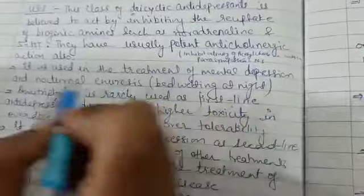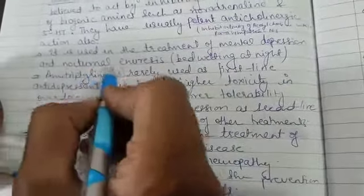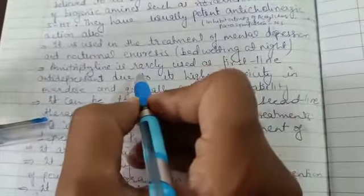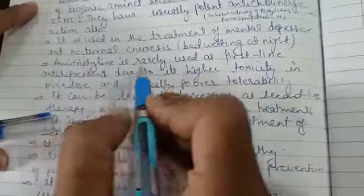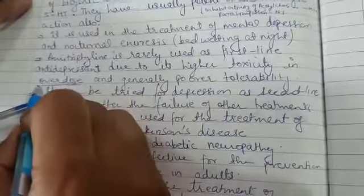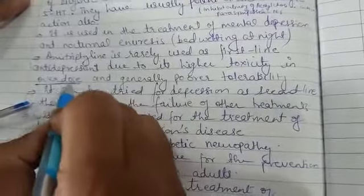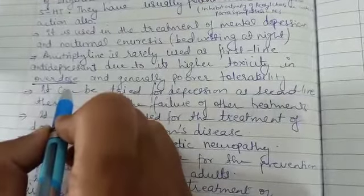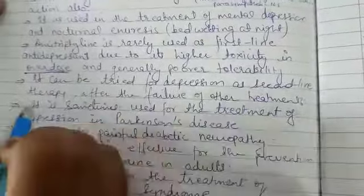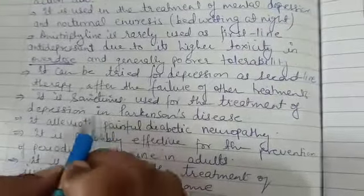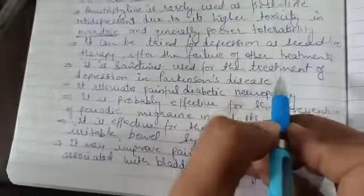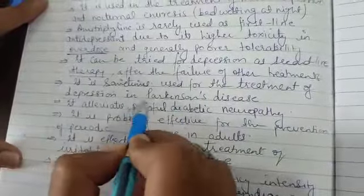It is also used in the treatment of mental depression and nocturnal enuresis. Some children who have bedwetting at night may need to treat it for mental depression. It is very much used as first-line antidepressant, but due to its high toxicity in overdose, caution is needed.